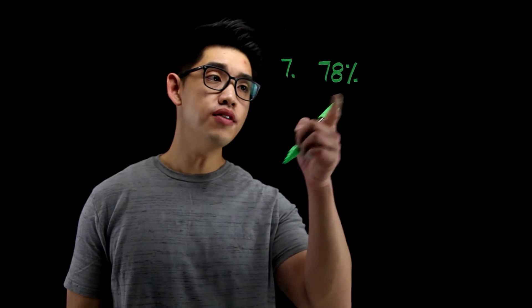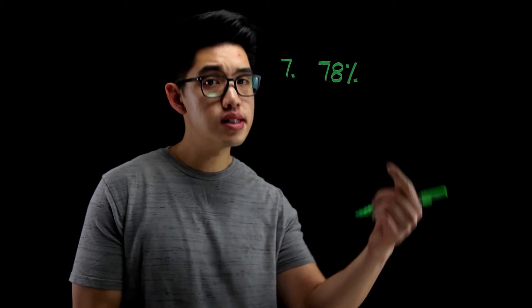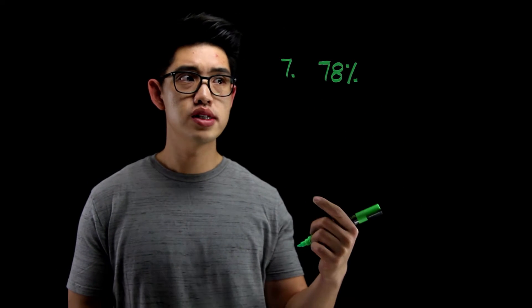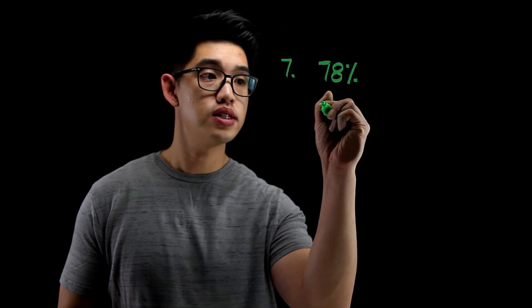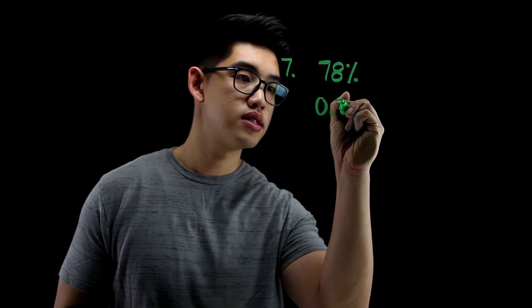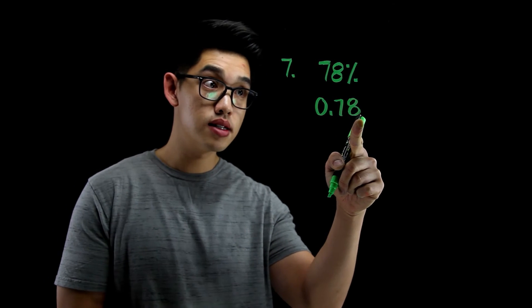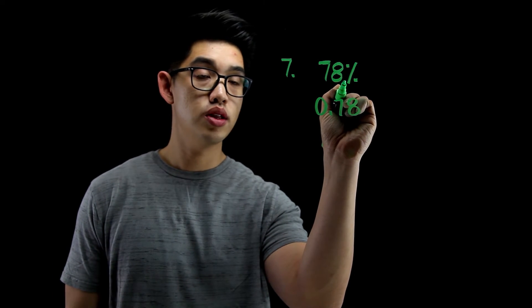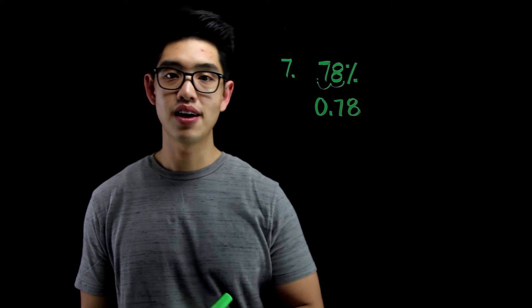For number 7, I have 78% and I want to convert it into a decimal. Now, since this says 78 percent, that's the same thing as saying 78 per 100, which is 78 hundredths. So, if you write this as a decimal, it's 78 hundredths. You're going to write 0.78 because that's 78 hundredths. Another way you can do it is the decimal is right here. You can just move it to the left two times. You go 1, 2, put a decimal point there and you get 0.78.